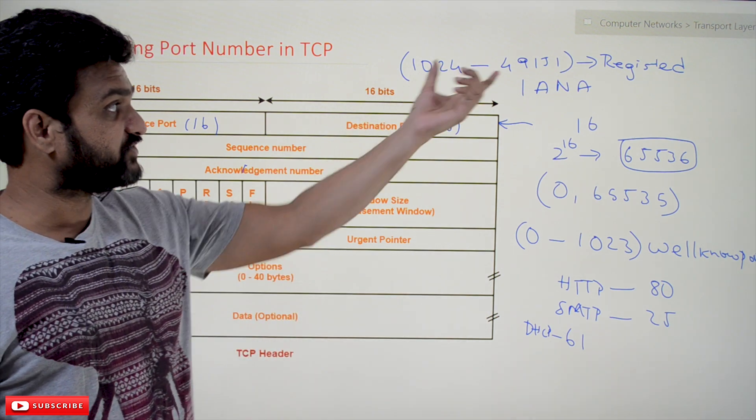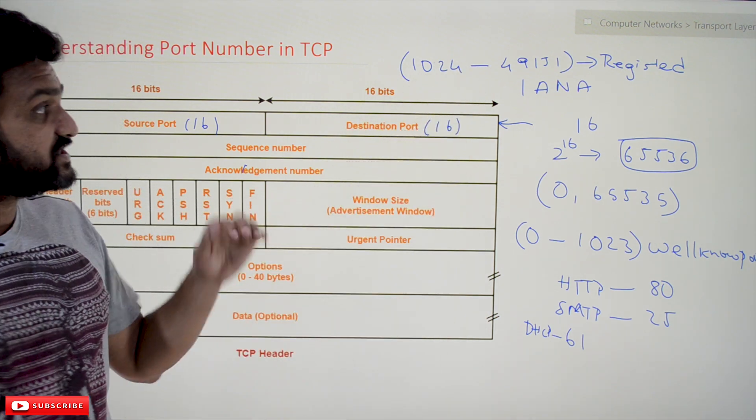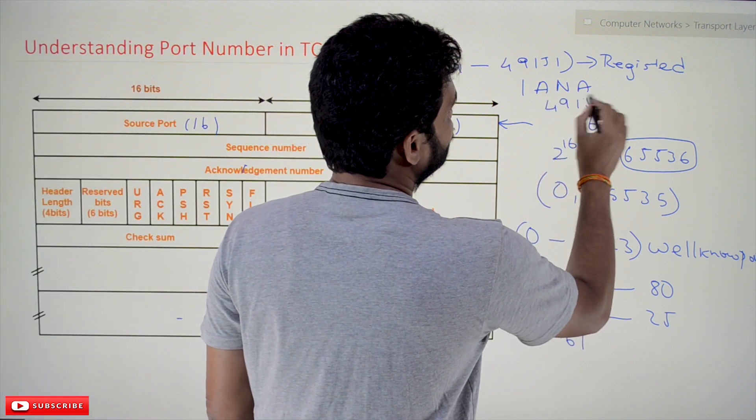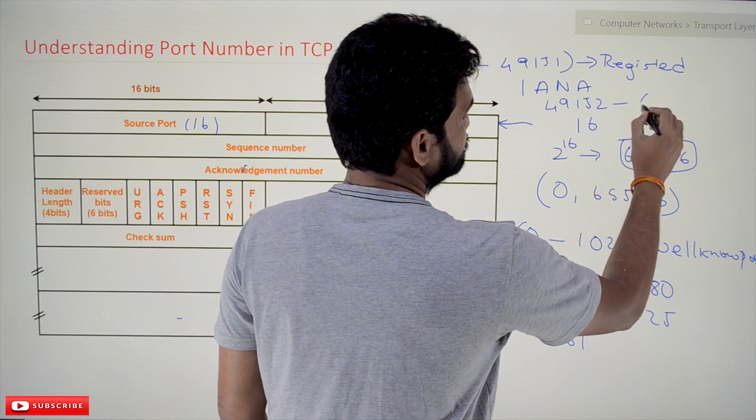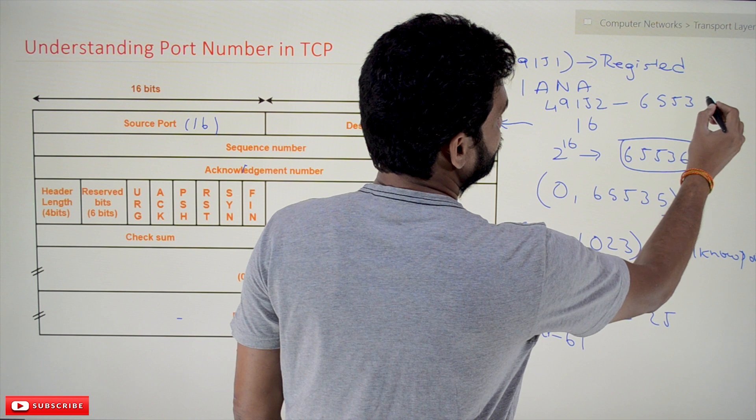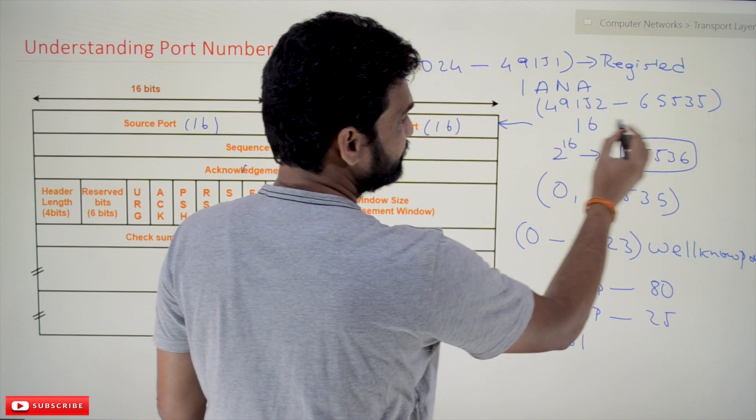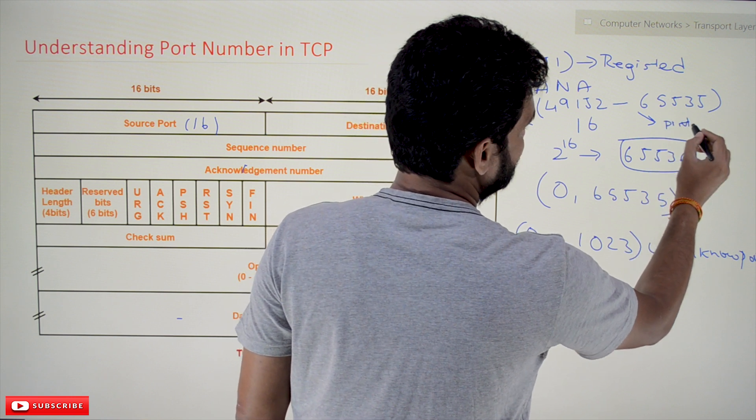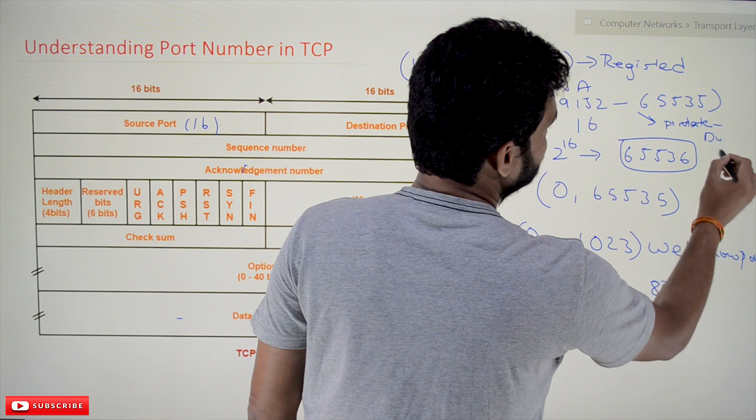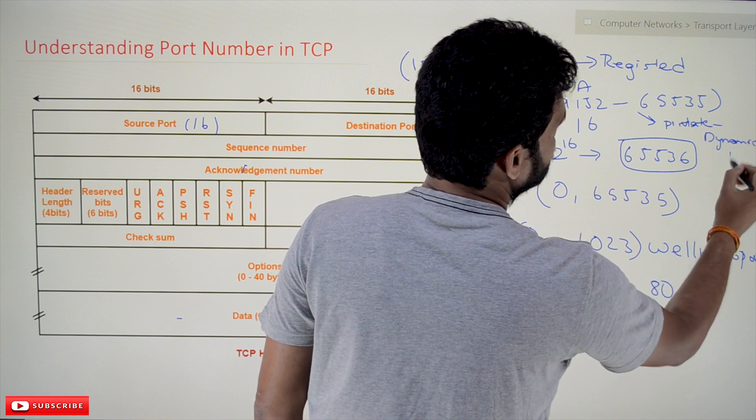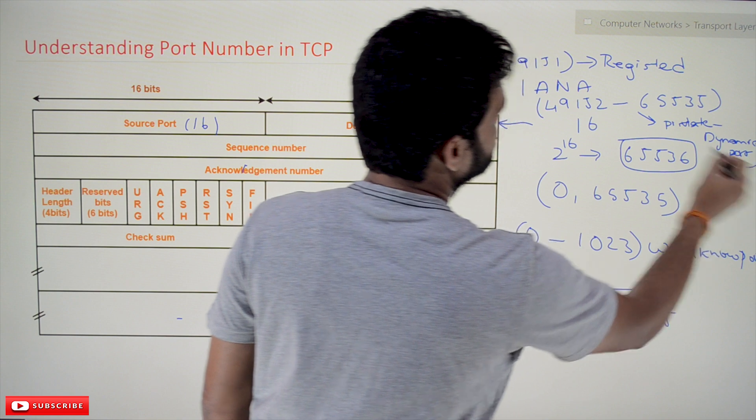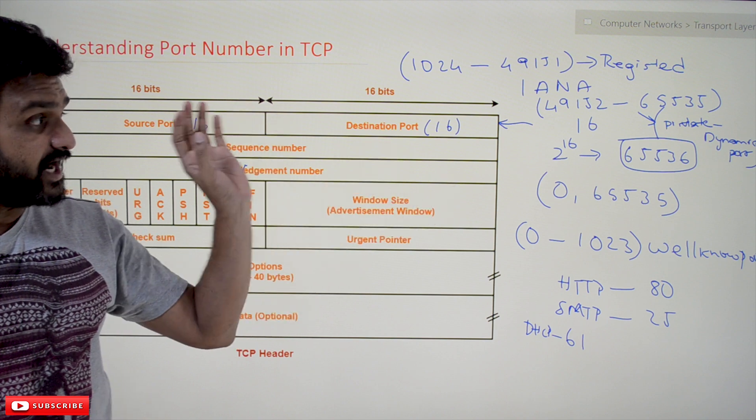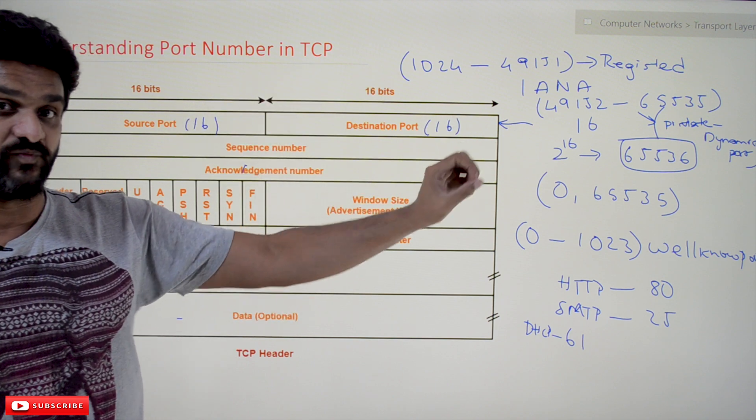From 49152 to 65535, these are the remaining numbers. These numbers are private or dynamic port numbers. These are the numbers which are dynamically generated by the systems, and those port numbers will be assigned in the flow.